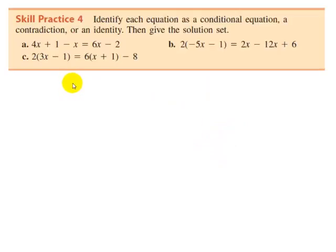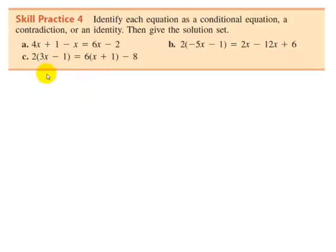Now pause the video and work this problem to check your understanding. Identify each equation as a conditional equation, a contradiction, or an identity, then give the solution set. Part A is 4x plus 1 minus x equals 6x minus 2. Part B is 2 times negative 5x minus 1 is equal to 2x minus 12x plus 6. Part C is 2 times 3x minus 1 is equal to 6x plus 1 minus 8. Play the video when you are ready to check.